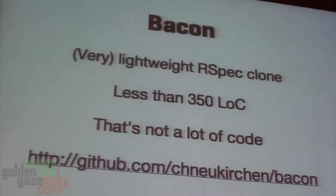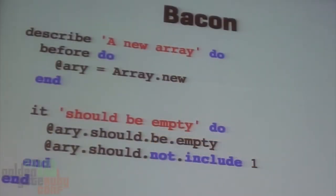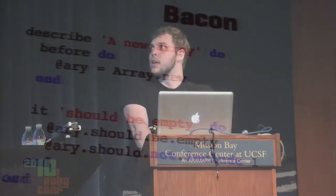Bacon is even more lightweight — less than 350 lines of code. It's surprising it even runs, but it actually runs really fast: at least an order of magnitude faster than RSpec typically. Ryan Davis gave me some benchmarks I'll be showing in a minute. Bacon has a similar but not identical syntax to RSpec. It doesn't have a lot of RSpec's more advanced features, but I think that's by design. It's designed to be very simple and bare-bones, and its speed is important — I'll get into why later.